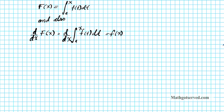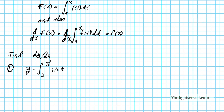Now let's take a look at the following. The instructions are to find dy/dx. For number one, we have a function y given as an integral of f(t) dt. If we examine FTC Part 1, the argument to the integrand is f(t). In this situation, f(t) is equal to sin(t).